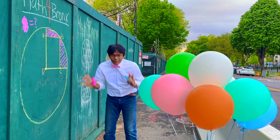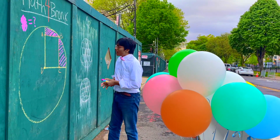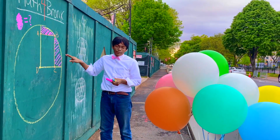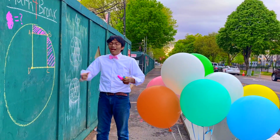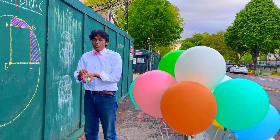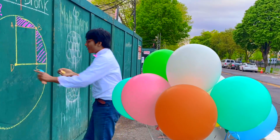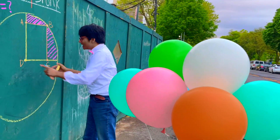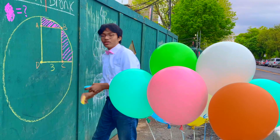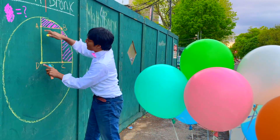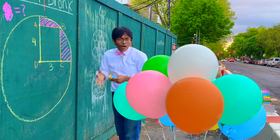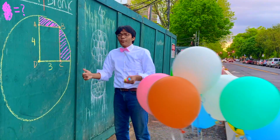The objective of this problem is to find the area of this purple region. CD is 3 and AD is 4 — that's given. So how are we going to find that purple area?